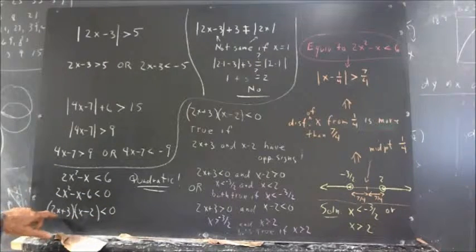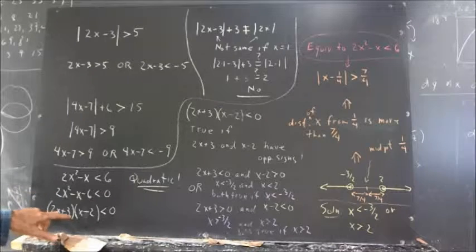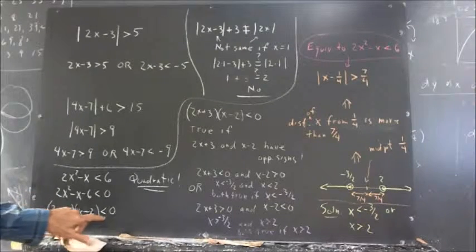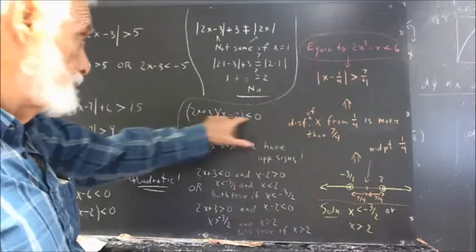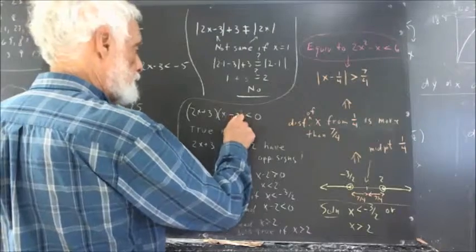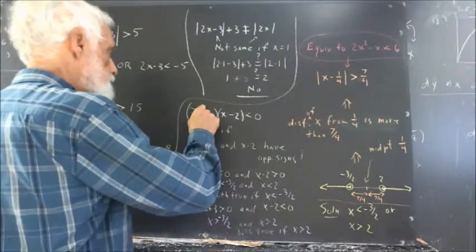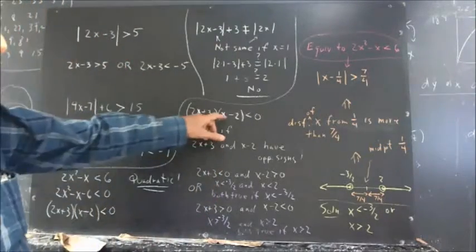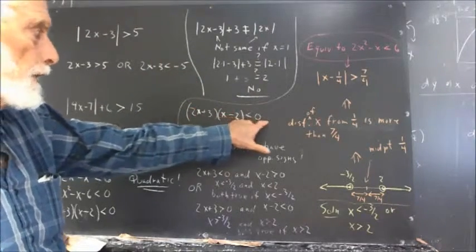Now we can factor this expression. Having factored it, we have the quantity 2x plus 3 multiplied by x minus 2 less than 0. The factoring gives us two factors whose product is negative.